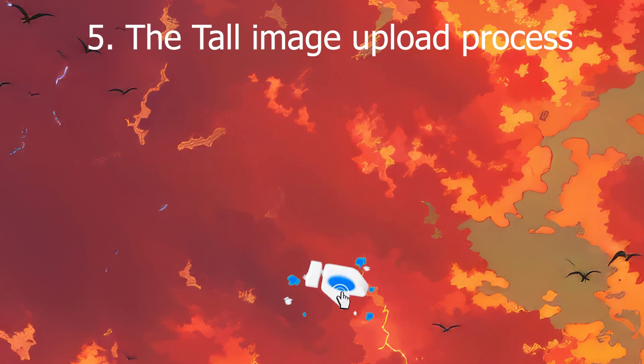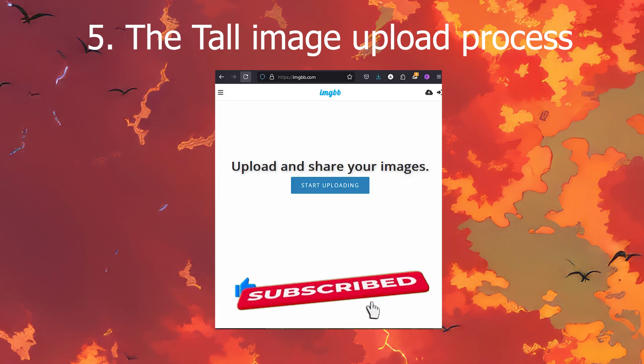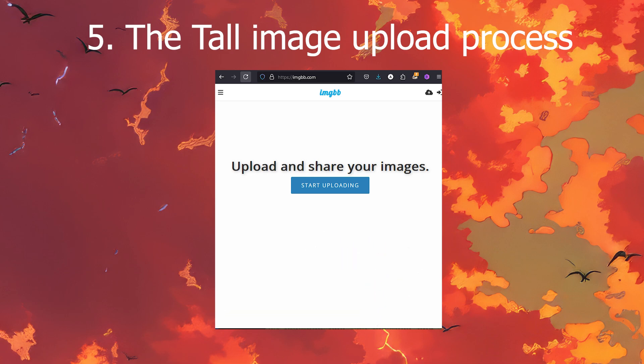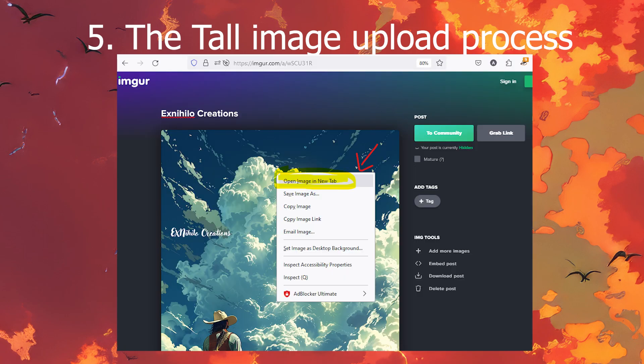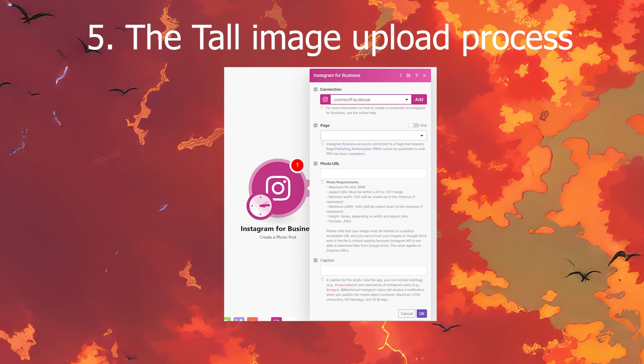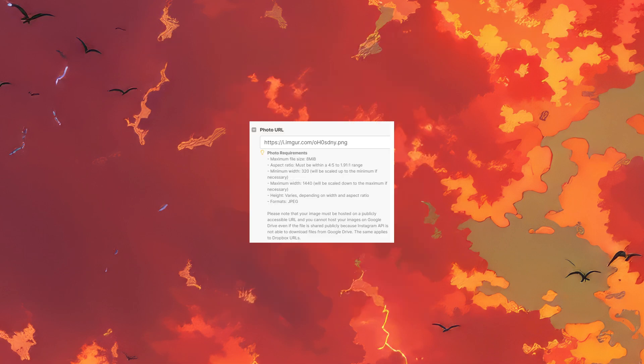The tall image upload process — here's the secret sauce. You need an image URL for this trick, so let's get that tall masterpiece ready to shine on Instagram. Head to your image host — IMGBB, Imgur, etc. — and upload your image. Right-click and open the image in a new tab, then copy that URL. This is your golden ticket. Head back to make.com and paste the URL into the photo URL field. Don't forget to add a killer caption. You've just hacked Instagram.